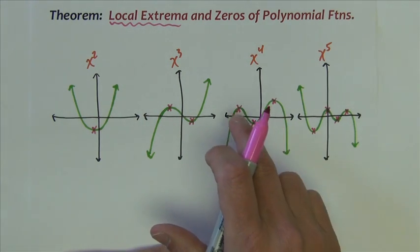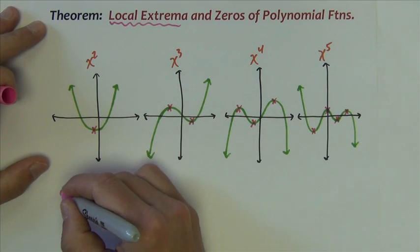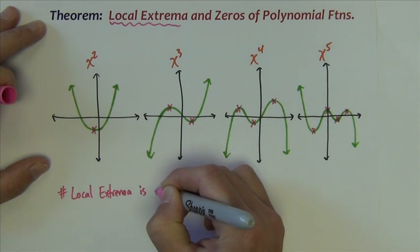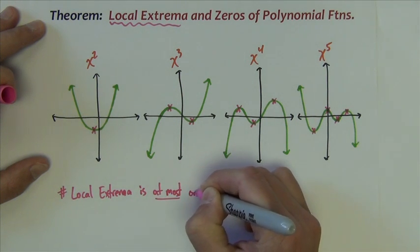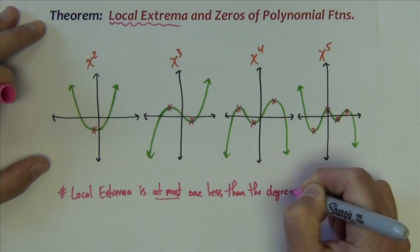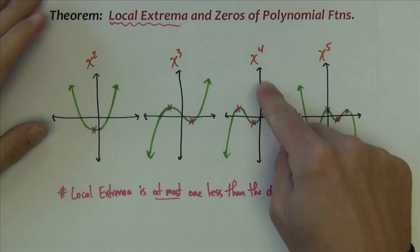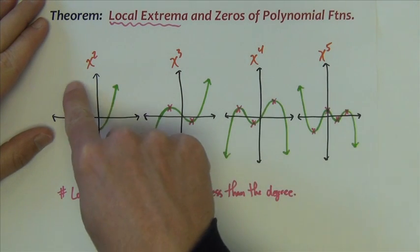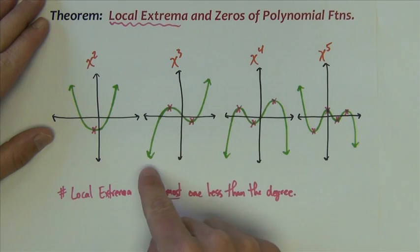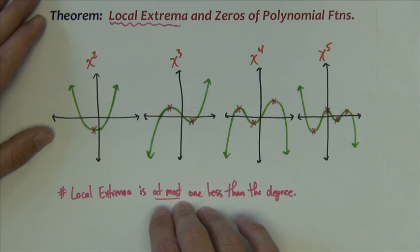So the number of local extrema is at most one less than the degree. I say 'at most' because it's possible to have less. Sometimes an x to the fourth function acts like x squared and only has one extremum. Sometimes an x to the third just goes straight through without any high or low point. But the most they can have is one less than the degree.